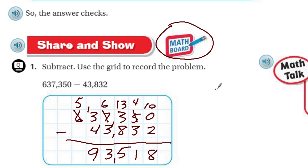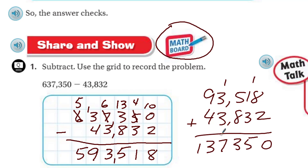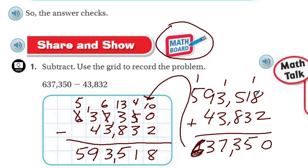It doesn't say to check your work, but let's do that. I'm going to add 593,518 and 43,832. That gives me 10, carry the 1 — that's 4, that's 5. Here I have 13, carry the 1 — that's 6, and that makes 7, and that's 13. Oh, I forgot to put my 5 down. There's the 5. 13, carry the 1, and then that's 6. Mr. Warra caught his own mistake! Does that match up? It does. Great — I caught my mistake.